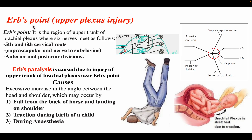Erb's point, also known as upper plexus injury, is a region of the upper trunk of the brachial plexus where C5 and C6 nerve roots meet. The nerves in the upper trunk include the suprascapular nerve, nerve to subclavius, and the anterior and posterior divisions of the upper trunk. Injury here causes Erb's paralysis.